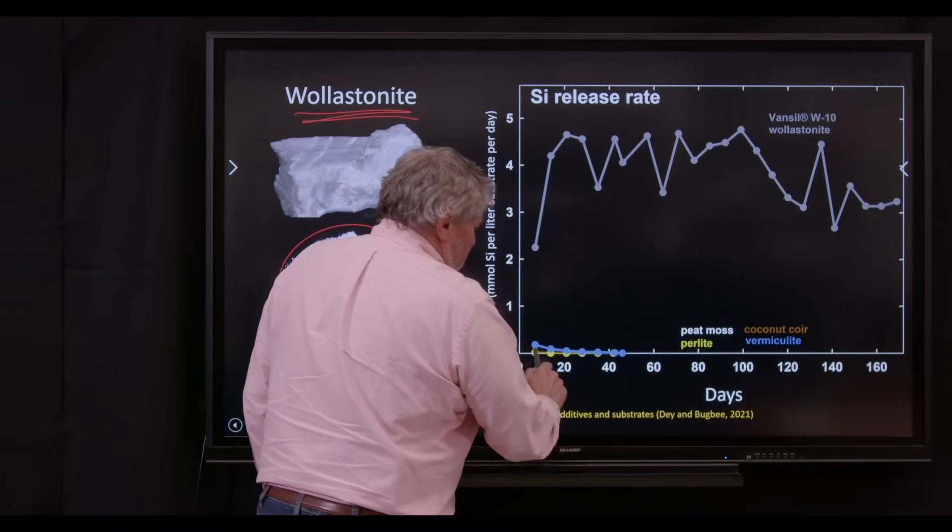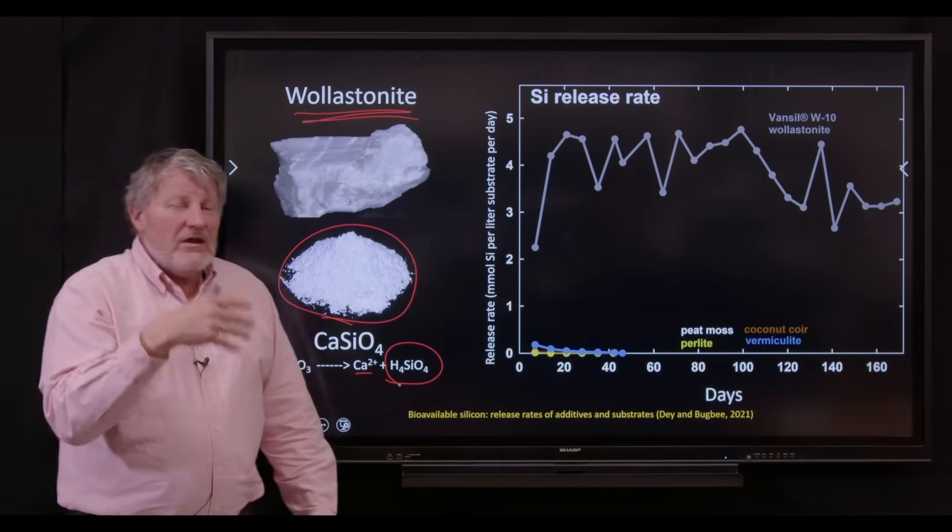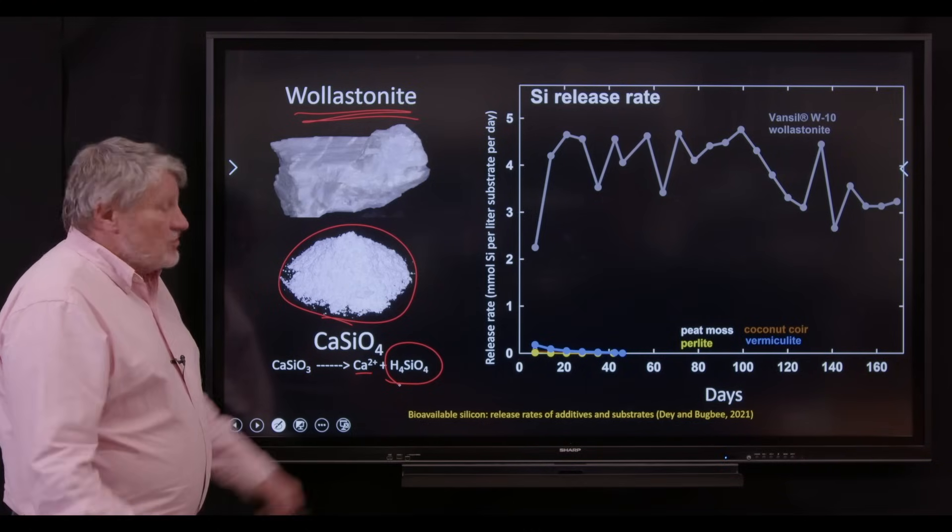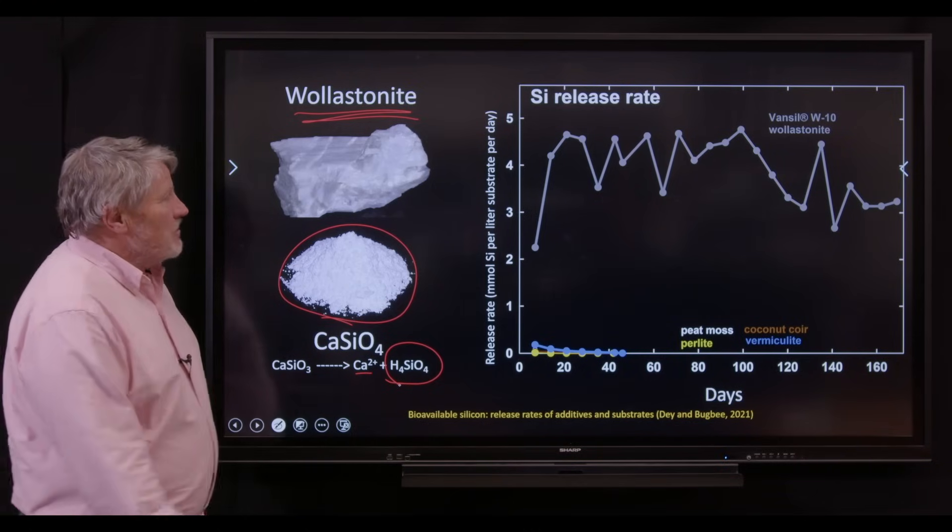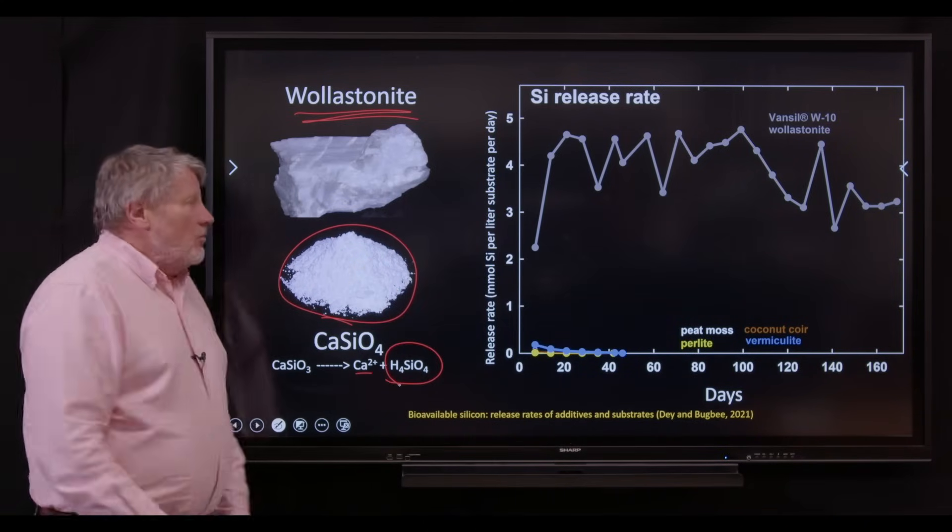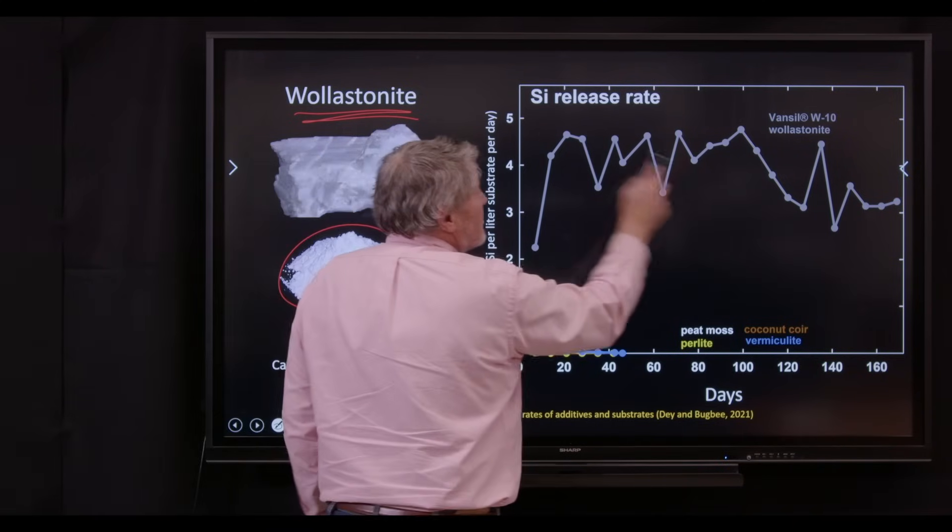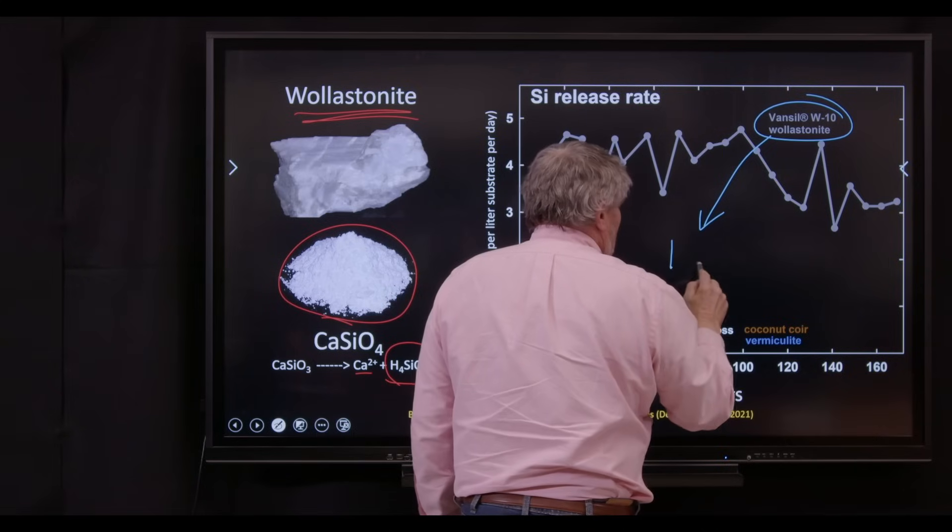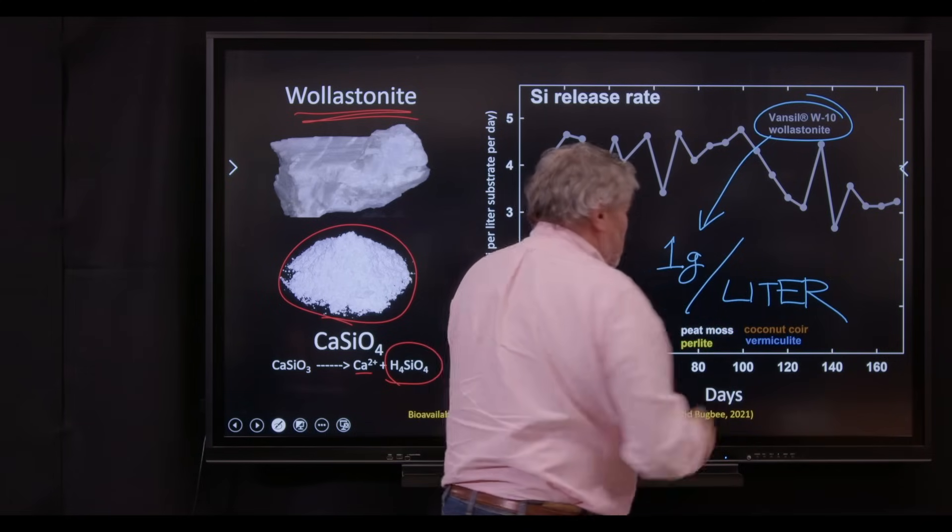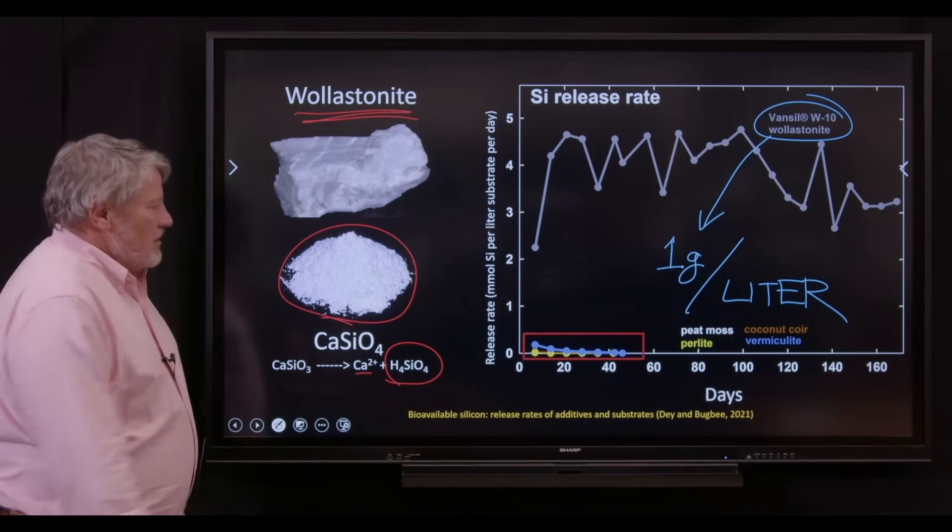Look at this. Peat, perlite, coconut coir, vermiculite. There's hardly any silica down here. There's Wollastonite. This is Vansel W10. This is a brand name of an American Wollastonite mined in New York. And it's sold for horticulture uses like this. And this is, look at it, 160 days. It was still releasing silica. This is a wonderful product. We put it in our media at, actually the brand name we use is Vansel 10. We put it in our media at one gram per liter. I know that's metric units, but you can convert to whatever other numbers you want. There's the low rate here.